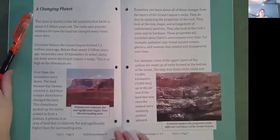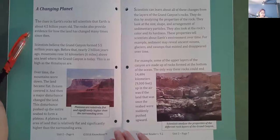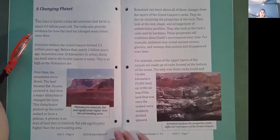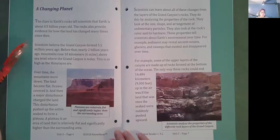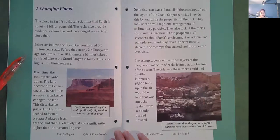A changing planet. The clues in Earth's rocks tell scientists that Earth is about 4.5 billion years old. The rocks also provide evidence for how the land has changed many times since then. Scientists believe the Grand Canyon formed 5.5 million years ago. Before that, nearly 2 billion years ago, mountains rose 10 kilometers or 6 miles above sea level where the Grand Canyon is today.